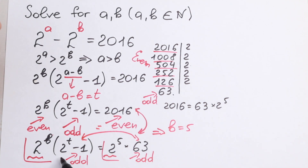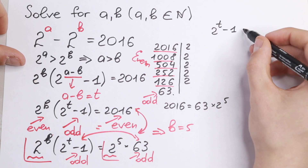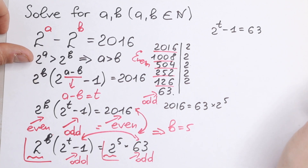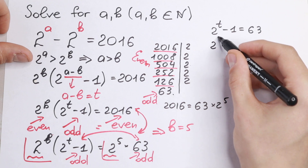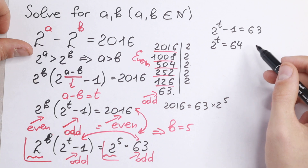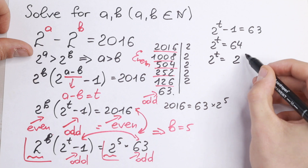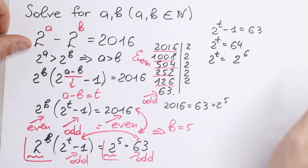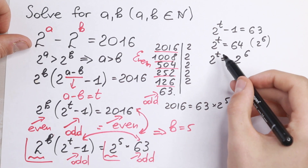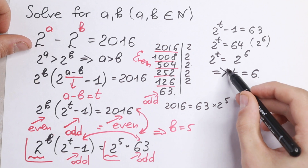From the odd part equation: 2 to the power T minus 1 equals 63, so 2 to the power T equals 64. We know that 64 equals 2 to the 6th power, so T equals 6. This is a classic exponential equation.